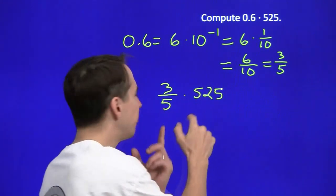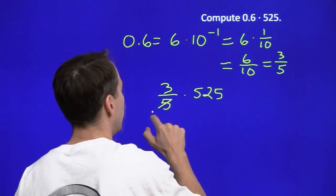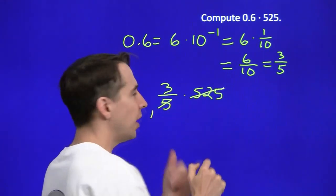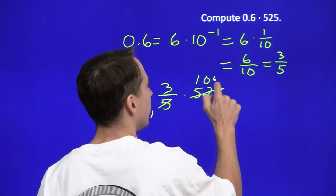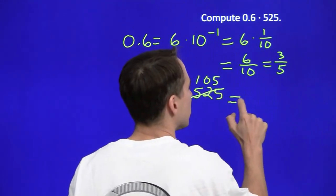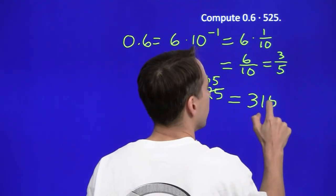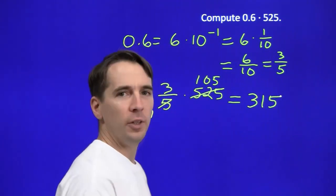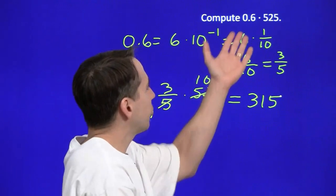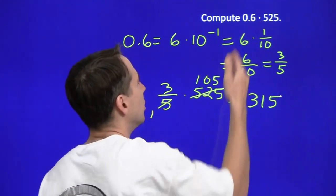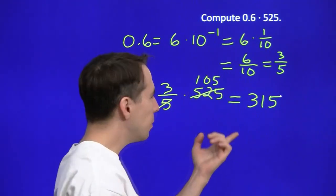We have a common factor of 5 here. That makes this a lot easier. Divide 5 into that, we get 105. And my answer is just 3 times 105 is 315. Oh, that was really convenient. So we see sometimes we turn a decimal into a fraction, we can do some of these computations much more easily.